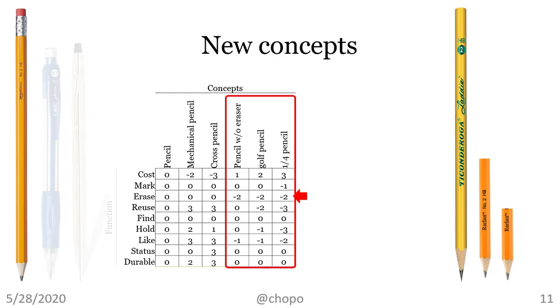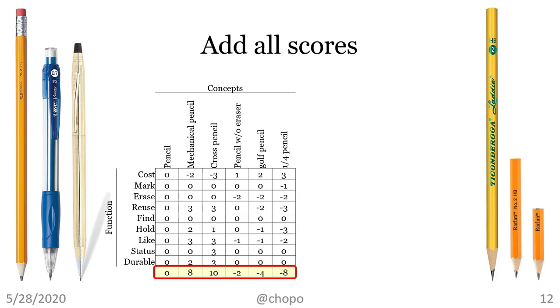All three concepts have no eraser. So, we can level them at minus two. But we could give them all a minus three. Same difference. The golf pencil and the quarter pencil are meant to be tossed. So, they are not really reusable. The quarter pencil will be the worst of the worst, wow, as it is the least reusable.